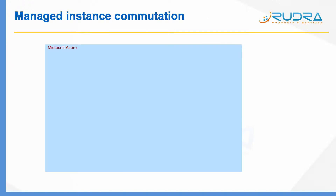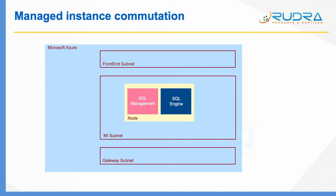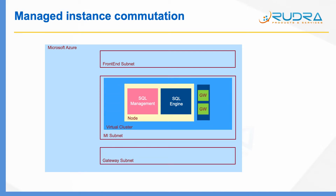When you create Managed Instance, a virtual network gets created which will have a front-end subnet, a gateway subnet, and a managed instance subnet. The node that you deploy as part of managed instance creation gets deployed into the MI subnet. Each node basically consists of an SQL engine and SQL management. Within the same network, you can deploy multiple nodes, and these multiple nodes will form a virtual cluster with gateway servers.